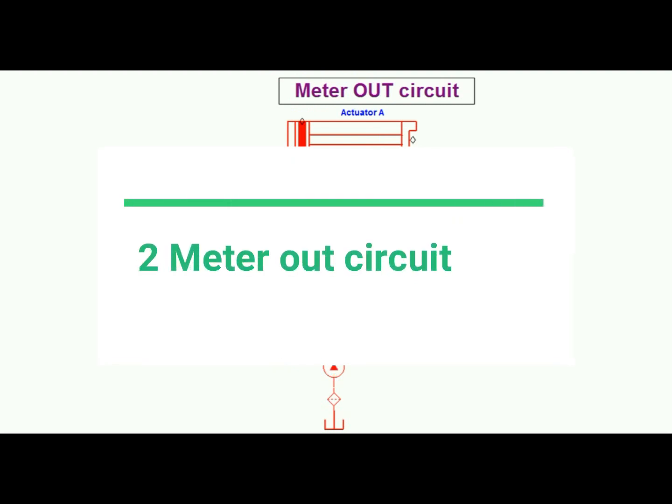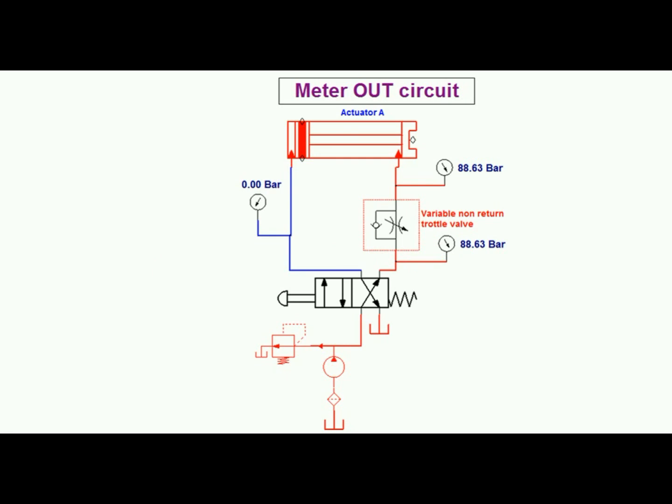The meter out circuit operation shown in figure. With a meter out circuit, a flow control valve is installed on the return side of a cylinder so that it controls a cylinder's actuation by metering its discharge flow.